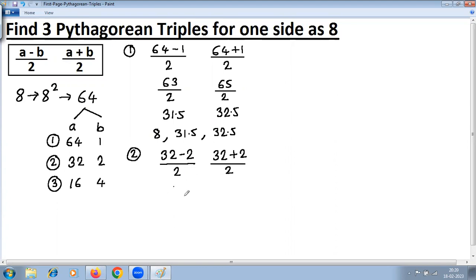So this will give 30 upon 2. This is 34 upon 2. 30 divided by 2 is 15, half of 34 is 17. So the second triple is 8, 15, 17.